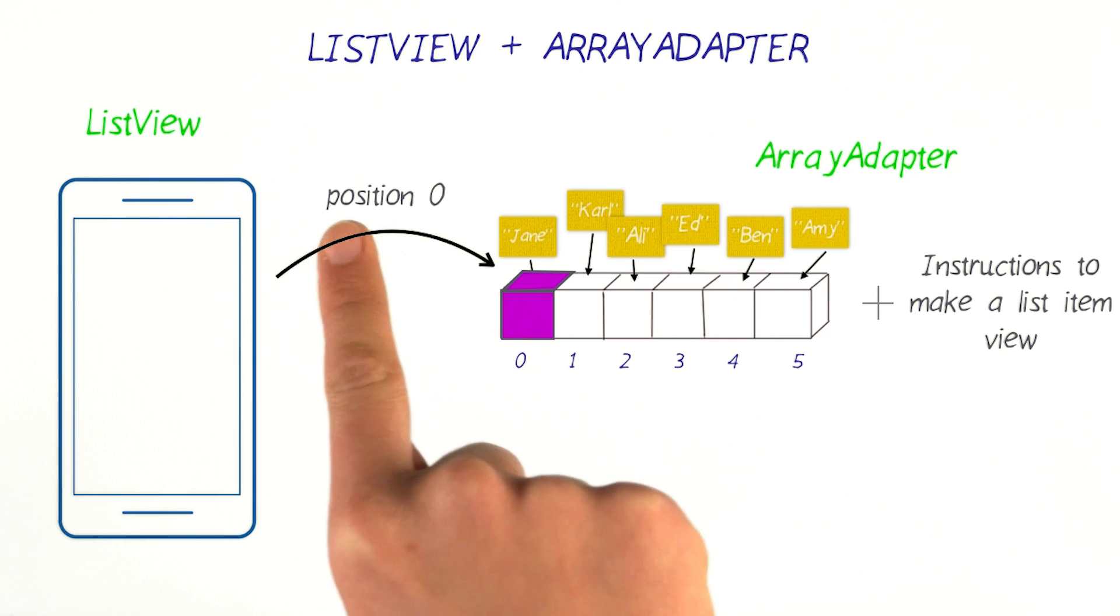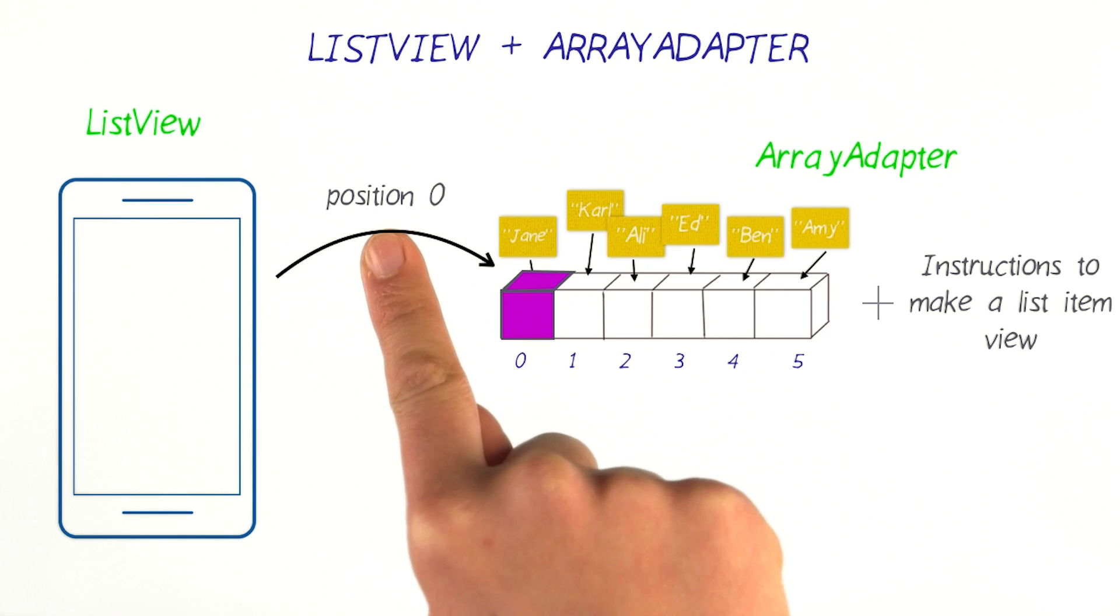The list view calls a method on the array adapter. In this method, it will pass in an input, which is the current position in the list that the user is currently viewing. In this case, it passes in position zero.